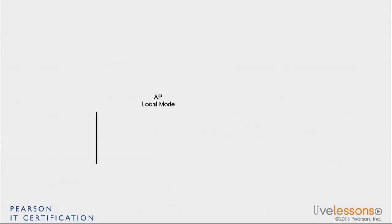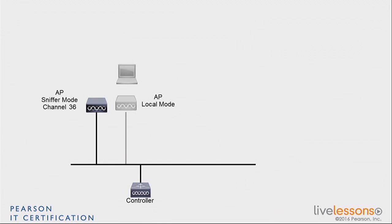There is another mode which is interesting, which is the sniffer mode. Imagine that you have an access point in local mode, sending and receiving traffic. The sniffer mode access point is another access point nearby, in the same location, that you turn specifically to sniffer mode. Then you ask it to sniff a specific channel, one on 2.4 and maybe one on 5 GHz.